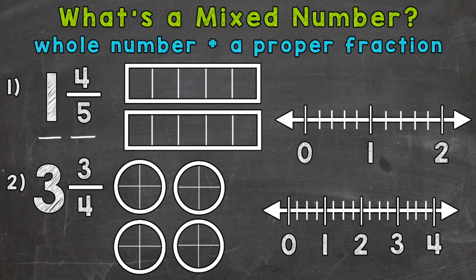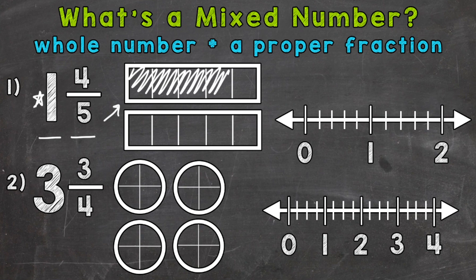We'll start with the model. I have two rectangles here — this is where we are going to model. We need one whole rectangle filled in to represent that one whole. Each rectangle is cut into fifths, so I've filled in five sections out of five sections. That can also be written as five fifths, which is equivalent to one whole.